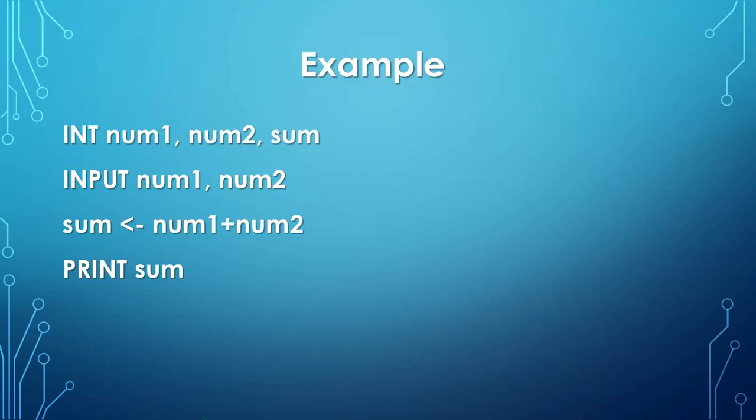The second line is input num1 and num2. And the third is for calculation. Sum equal to - this assignment sign is equivalent to the equal to sign in pseudocode. So we are using this assignment sign in pseudocode. num1 and num2 addition and then store in the sum variable.